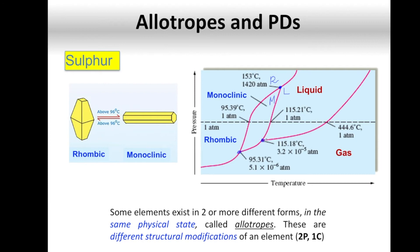Same argument works here. You have the liquid, the gas, and the monoclinic phase. Triple point, because three phases touch this one point. Triple point here, rhombic, monoclinic, and gas phase. Three different phases touch that one point, so it's a triple point.